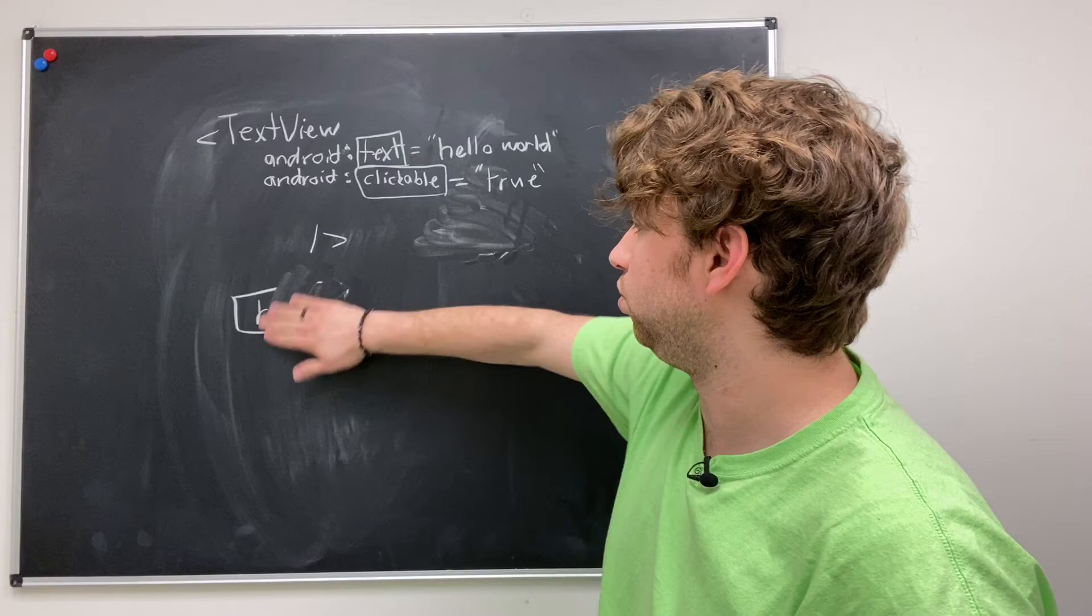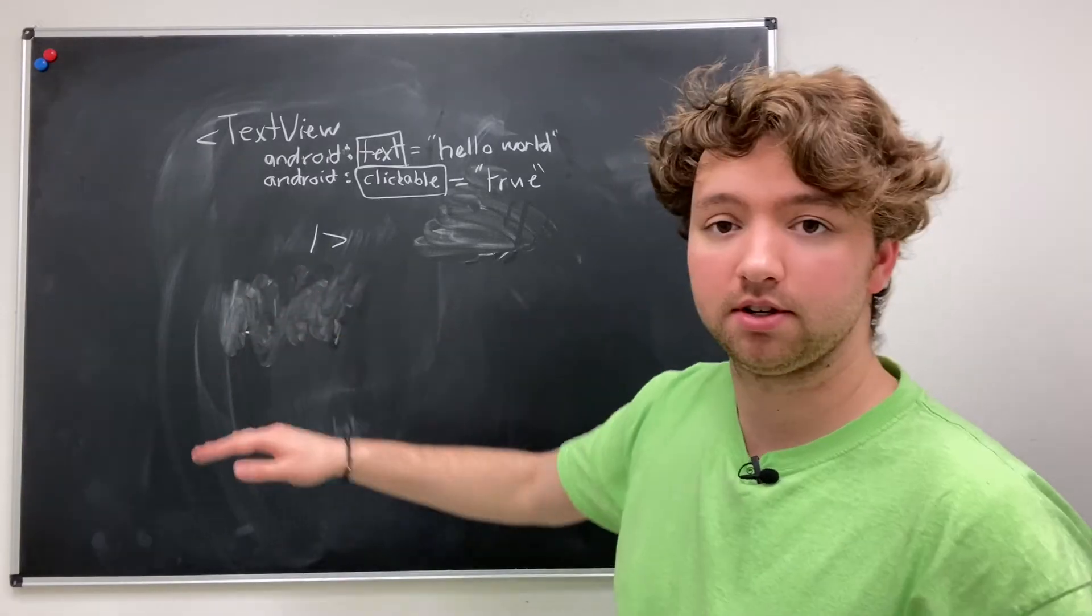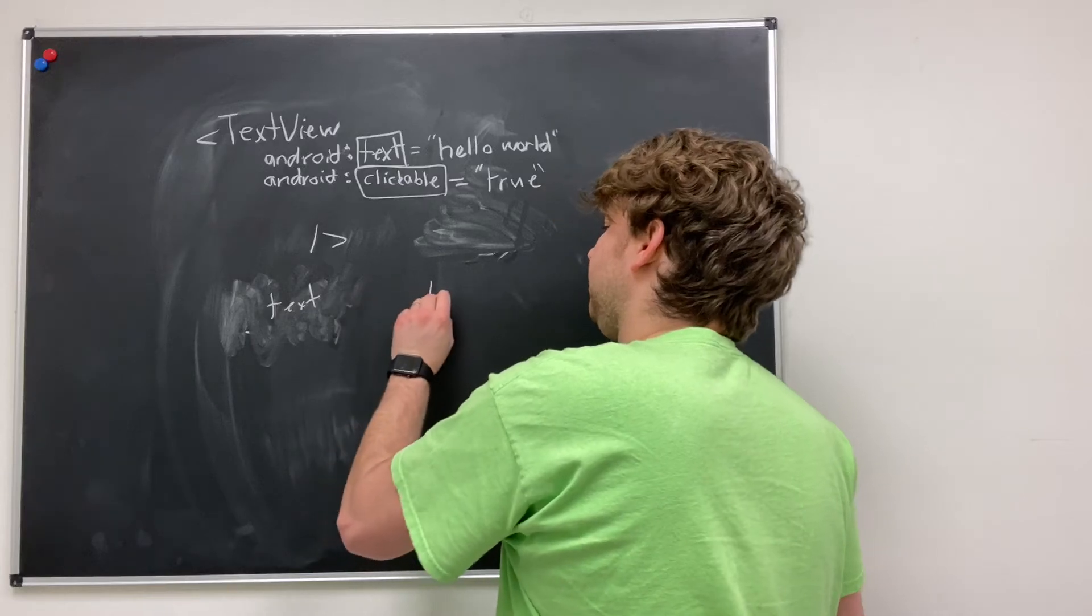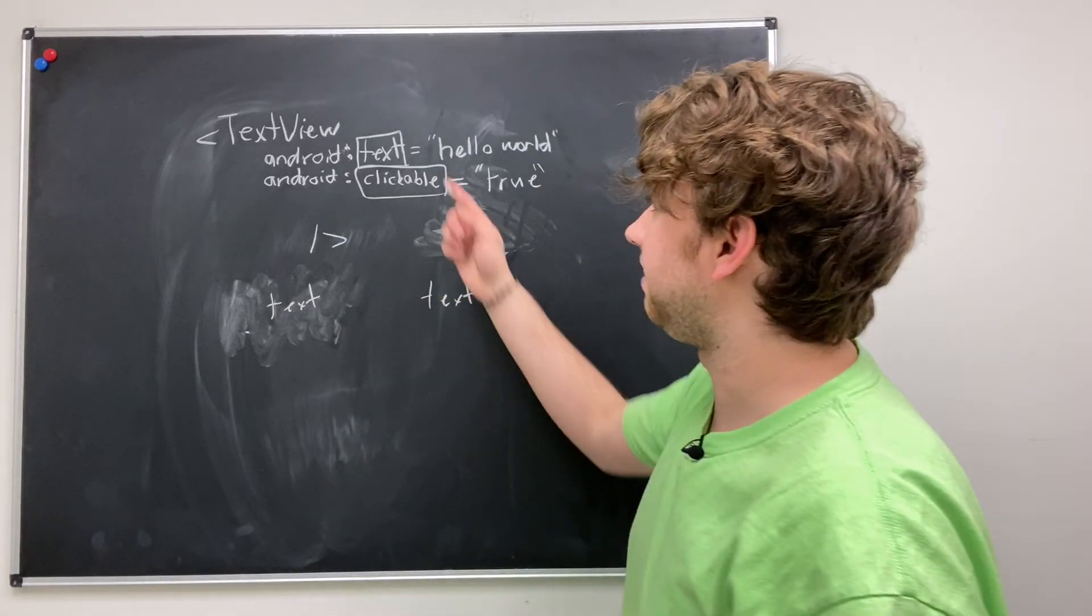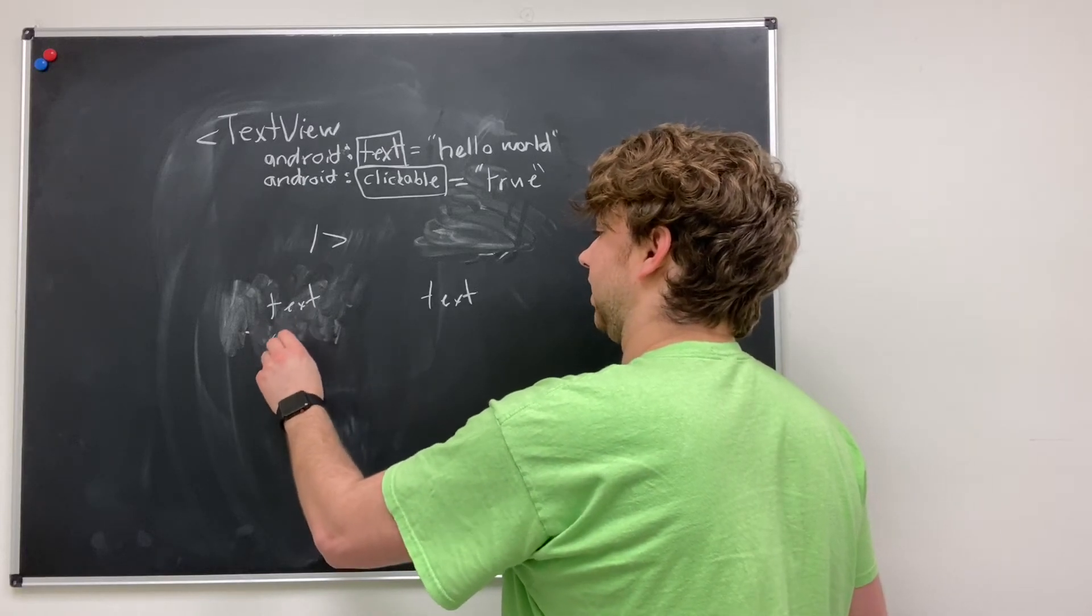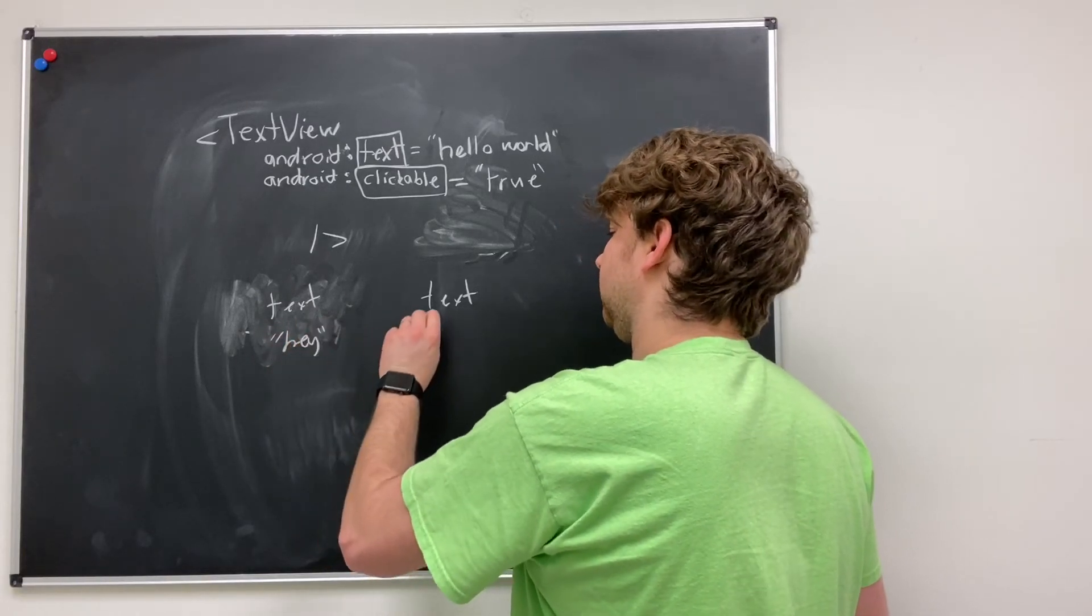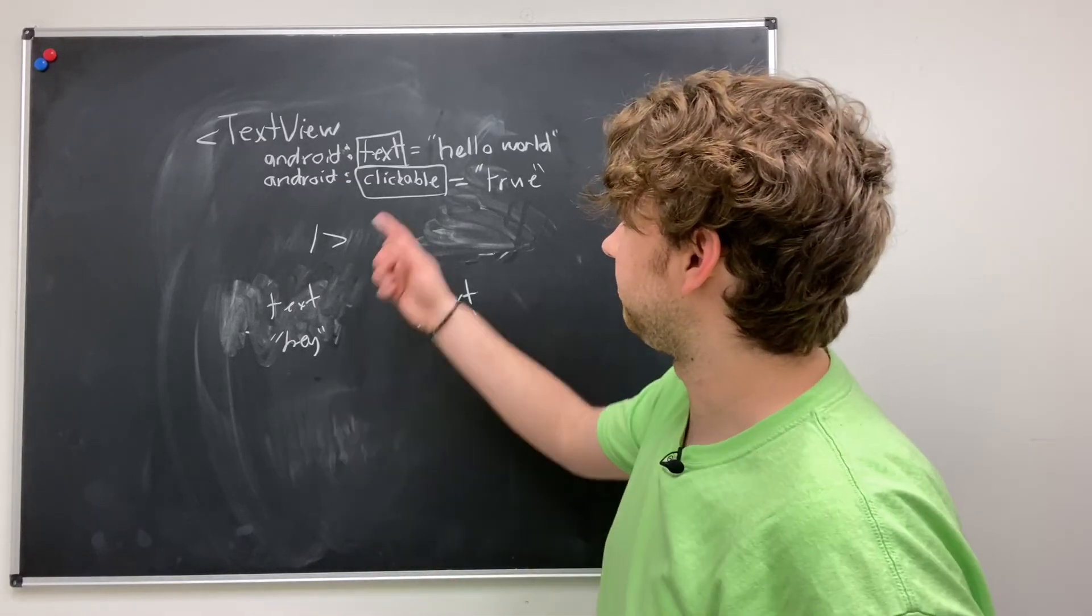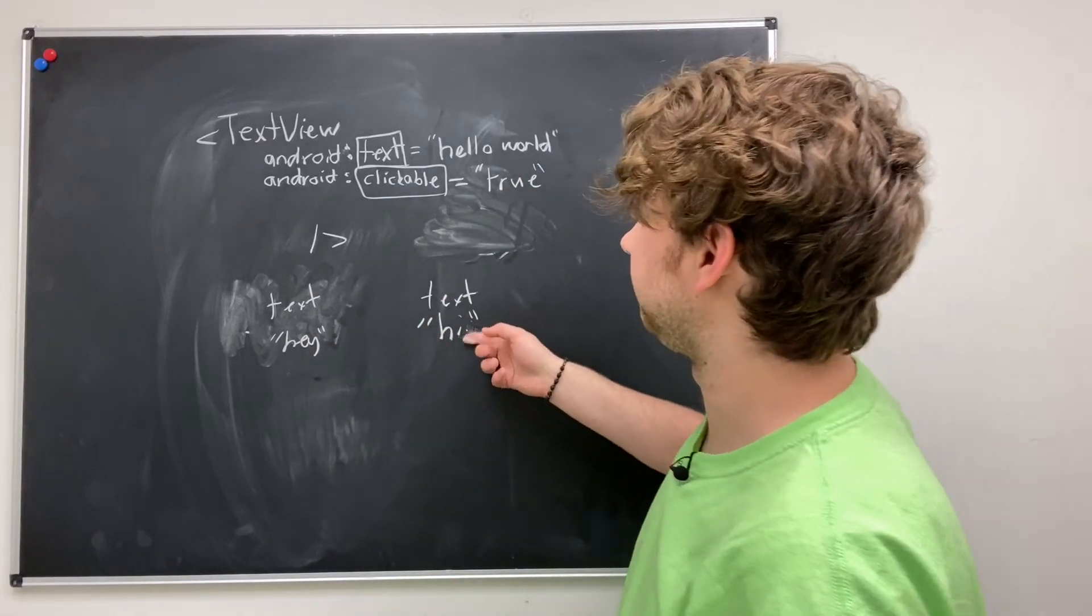And also if you have two of the same types of views, so for example if we have a TextView and we have another TextView, these values are going to be set independently. So this one's going to have its own value, and this one will have its own value. This one can have clickable true, and this one can have clickable false.